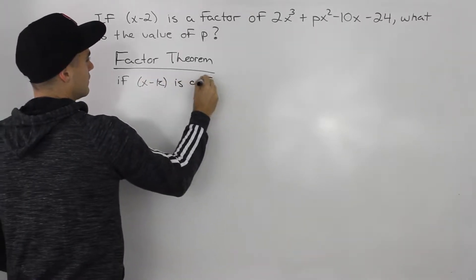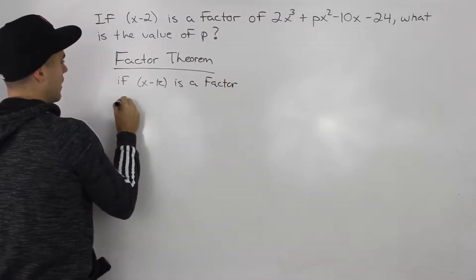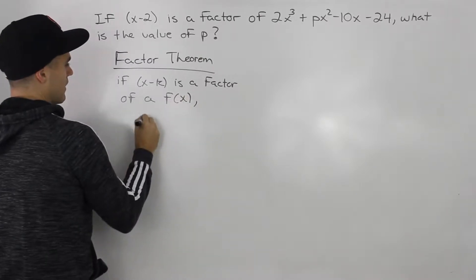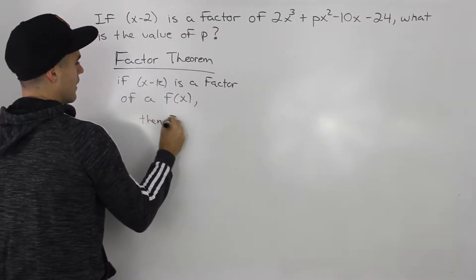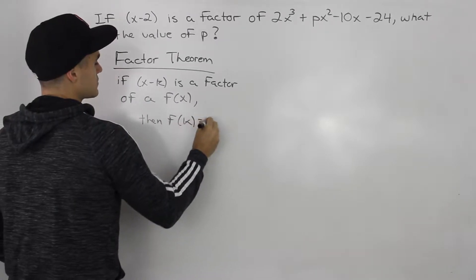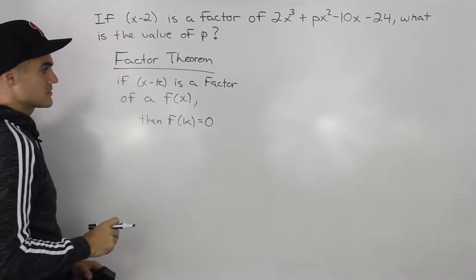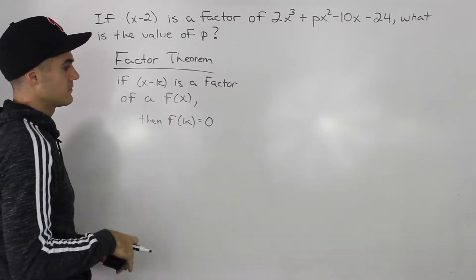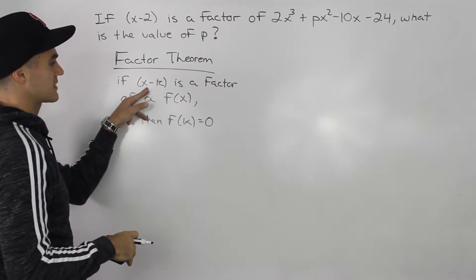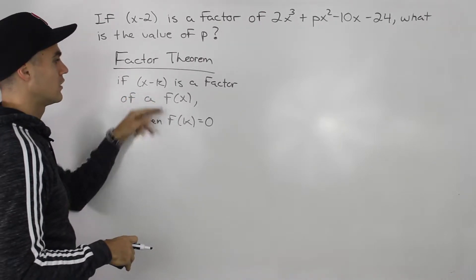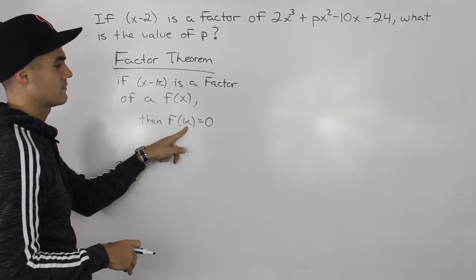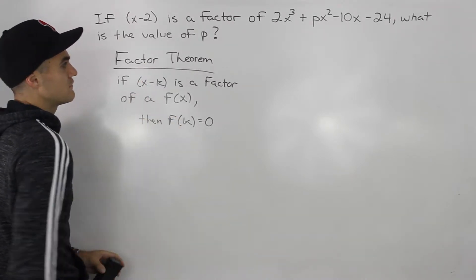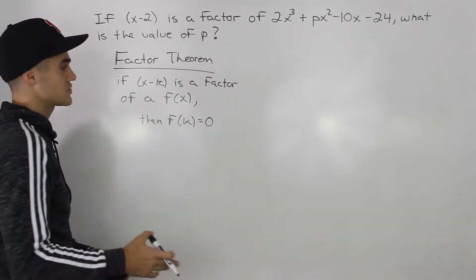...then that means f of k is equal to 0. Right? We can also use the remainder theorem because we know that if you're dividing by x minus k, the remainder is always going to be f of k, whatever that number is. But if it's a factor, the remainder is always going to be 0.